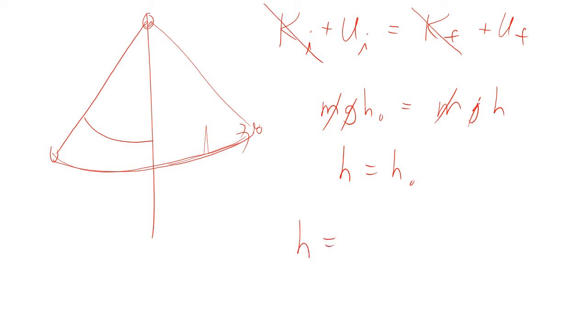So the final height has to equal the initial height. Well, the height is given by L times 1 minus cosine theta. So that means the final height is going to be equal to the initial. The only way that works is if the final angle equals the initial angle. So that means it's going to swing over this way, 41.5 degrees. And then the next question, when it swings back, how far is it going to go back the other way? 41.5 degrees. It's going to go back to the starting point.